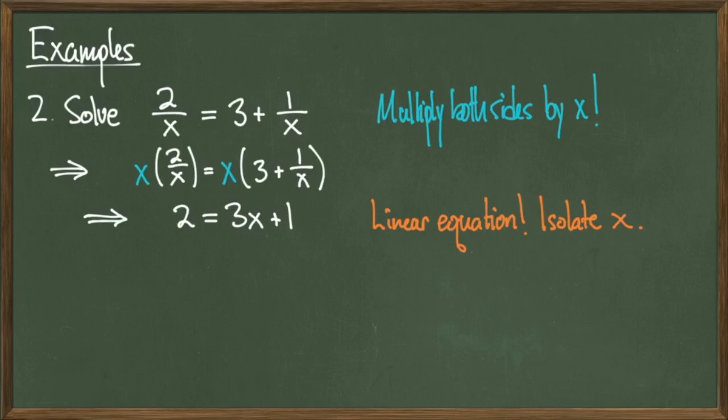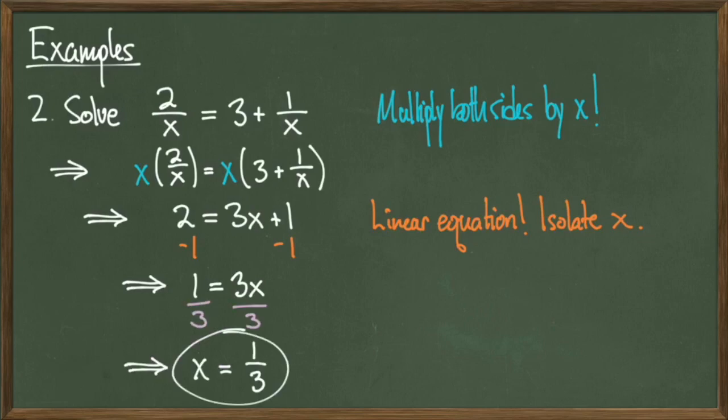So we have a linear equation, now all we need to do is isolate x. I can start by subtracting 1 from both sides to get the revised equation 1 equals 3x, and then I can divide through by 3 to get a solution of x equals 1 third. So my goal was succeeded. Remember, what I'm trying to do is clear all x's from denominators, and I've done so by multiplying through by x in that first step.